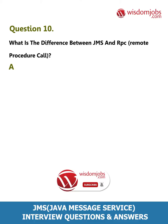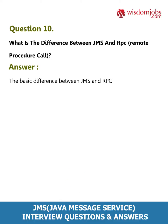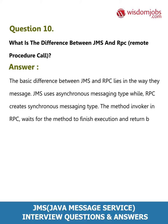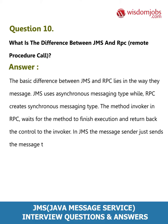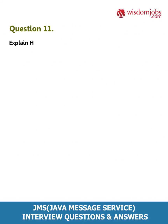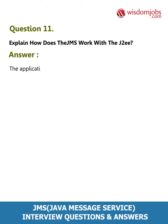Question 10: What is the difference between JMS and RPC (Remote Procedure Call)? Answer: The basic difference lies in the way they message. JMS uses asynchronous messaging while RPC creates synchronous messaging. The method invoker in RPC waits for the method to finish execution and return control to the invoker. In JMS, the message sender just sends the message to the destination and continues its own processing.